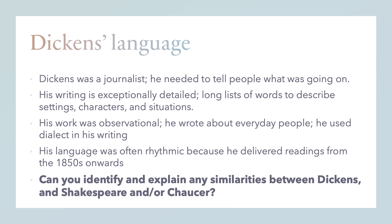As well as being famous for his novels, Dickens is very famous for his language and the way that he used words and grammar to get his points across. Dickens, first and foremost, as you'll have seen from the video, was a journalist — so he needed to tell people what was going on. That meant his writing was exceptionally detailed. He would have long lists of words to describe settings, characters, and situations, and would use multiple clauses in a row. Many a time, if you were reading a Dickens novel, you might get to the end of a page before you came across a full stop. He would keep describing and explaining and exploring right the way until he'd absolutely wrung every last drop of information out of that scene — and then he would put a full stop.